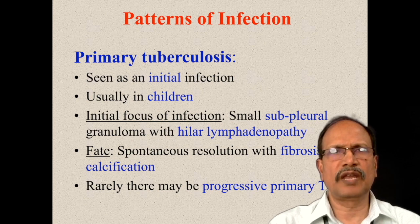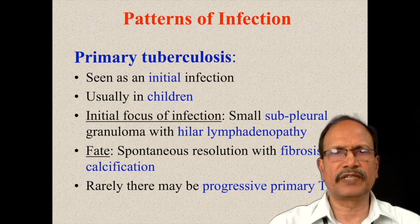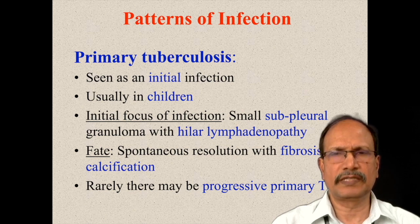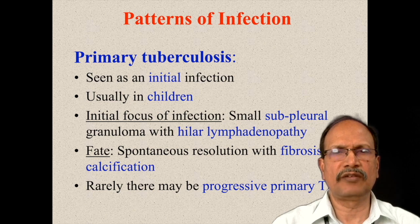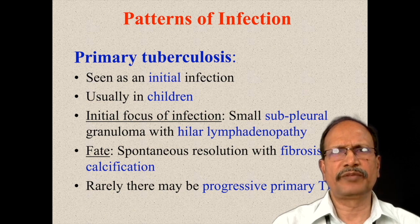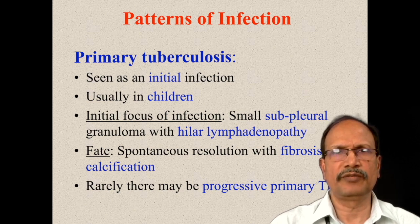To elaborate more on primary tuberculosis, seen as an initial infection especially in children, the usual location is the lung wherein you will see subpleural granulomas with hilar lymphadenopathy. The fate of this primary tuberculosis is self-containment and healing by fibrosis or calcification. Rarely, it can progress to the progressive variety of primary tuberculosis.